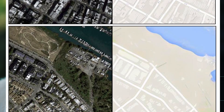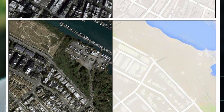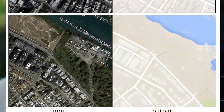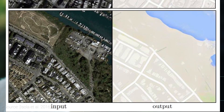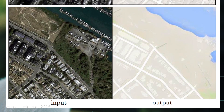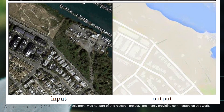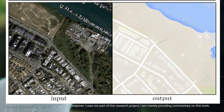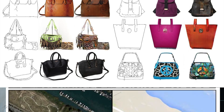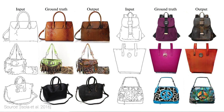It is translation in a sense that, for instance, we can add an aerial view of a city as an input and get a map of this city as an output. Or we can draw the silhouette of a handbag and have it translated to an actual, real-looking object.